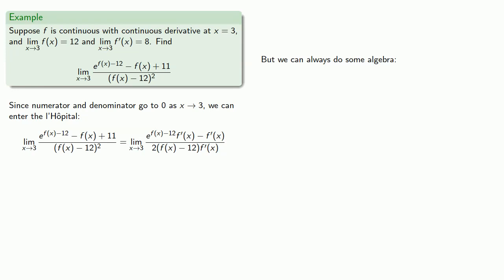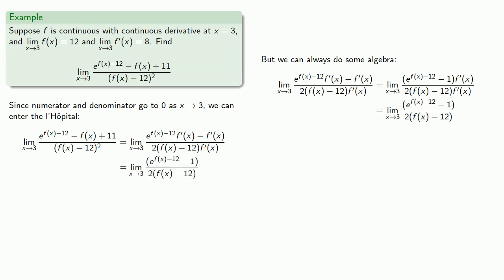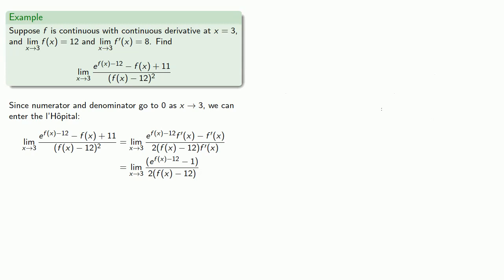But we can always do some algebra. And here, the thing to notice is that the numerator has a factor of f'(x) and so does the denominator, and we can simplify. And numerator and denominator still go to 0, so we can apply L'Hopital's rule again.